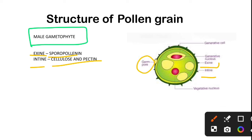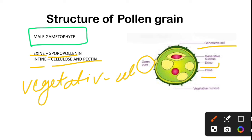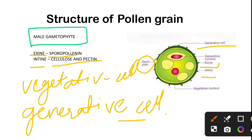The exine has germ pores where sporopollenin is absent, while sporopollenin is present in the rest of the exine. The intine is the complete inner layer. Inside the pollen grain we see two types of cells: the vegetative cell and the generative cell. The vegetative cell is bigger and stores abundant food, while the generative cell is smaller.